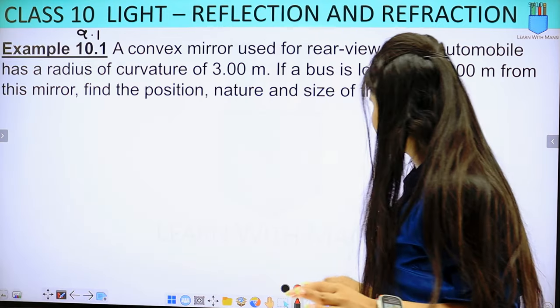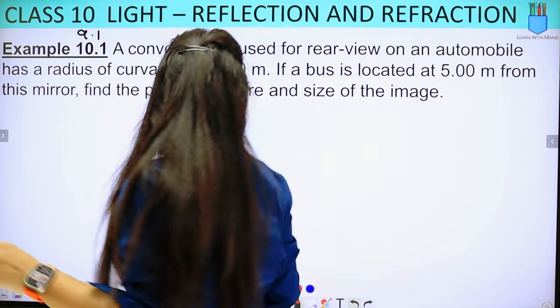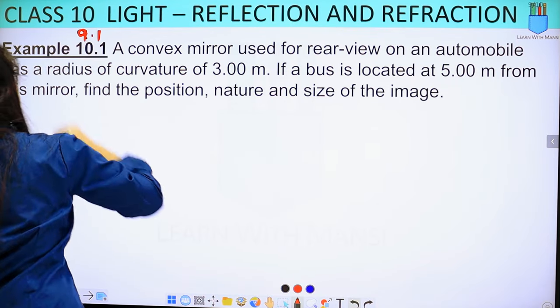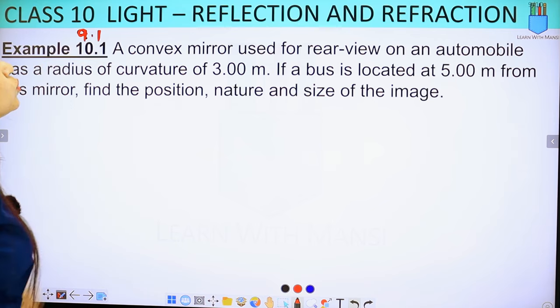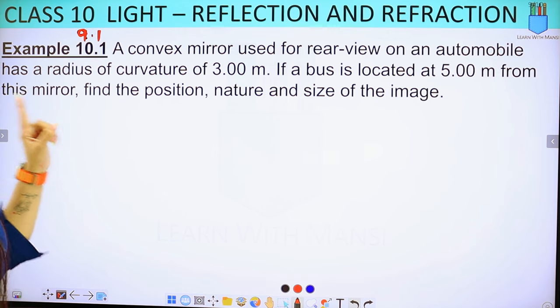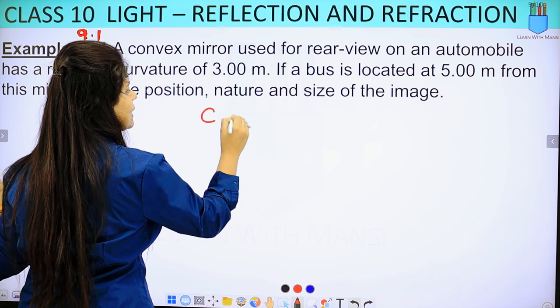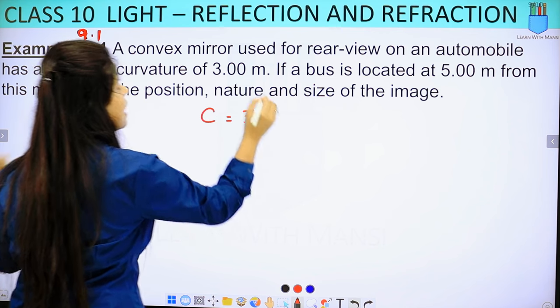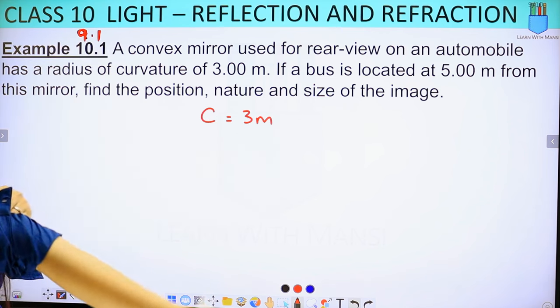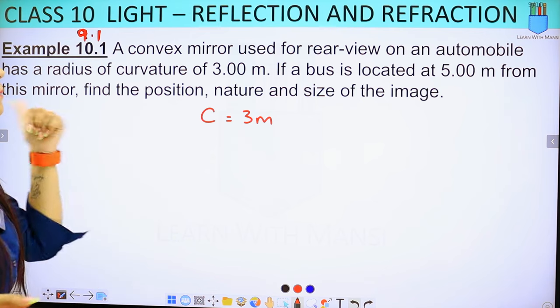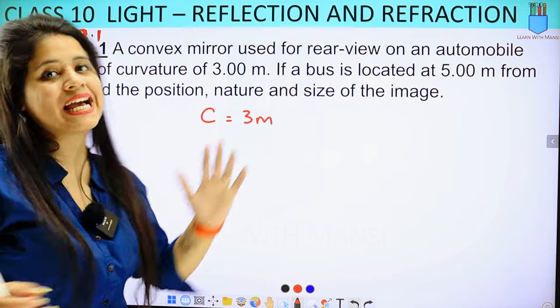So I will tell you about this confusion right now. Now, 9.1 is the example. A convex mirror used for rear view on an automobile has a radius of curvature of 3 meter. What does it give us? C gives us how much? 3 meters. If a bus is located at 5 meter from this mirror, find the position, nature and size of the image.